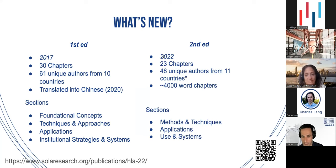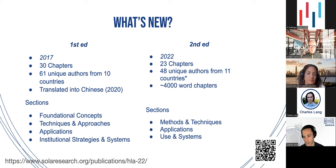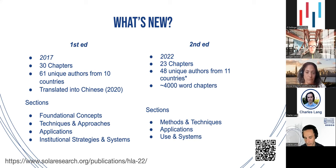The second edition came out in 2022 with fewer chapters and fewer unique authors, though authors came from 11 different countries — with an asterisk, as many of those came from a single purposefully international chapter. We actually tried to shrink the size of chapters to better fit the handbook's role as teaching and introductory material, aiming for about 4,000 words per chapter, whereas the previous edition had some chapters reaching 8,000 to 10,000 words.